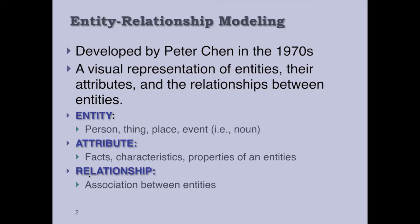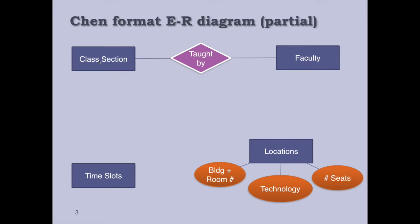There could be relationships between those entities. In this example we have four entities, shown as blue rectangles: class section, faculty, locations, and time slots. For the location entity there are several attributes like building and room number, what kind of technology is used, what are the number of seats - is it a small classroom maybe with 20 or 30 seats or a big lecture hall with maybe 50 or even more seats.